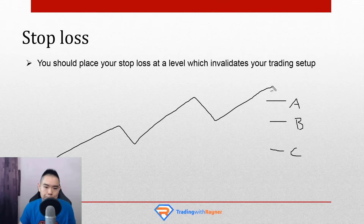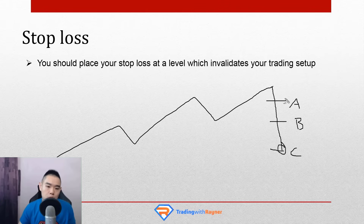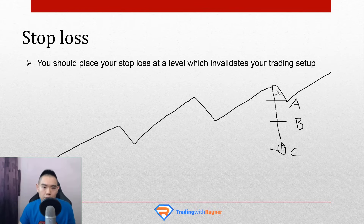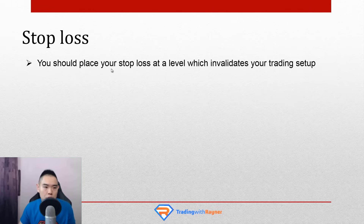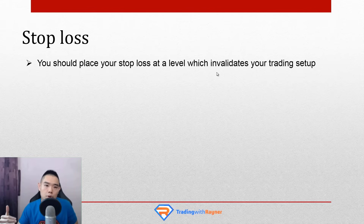The level that this trend gets invalidated is at point C, because if the market retraces all the way down to point C, then clearly this uptrend isn't looking like how an uptrend should be — a series of higher highs and higher lows. Your stop loss should be at C. Why not A or B? Because if the market retraces to A and continues higher, it still looks like an uptrend. If it retraces to B and goes up higher, the uptrend is still pretty much intact.